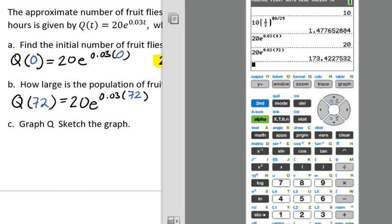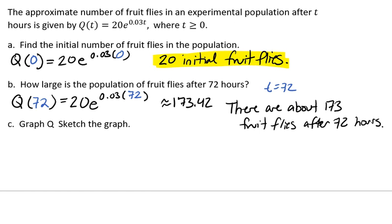When I plugged it in, I got 173.42. And since we can't really have a portion of a fruit fly, we'll round it to 173. So there are about 173 fruit flies after 72 hours.